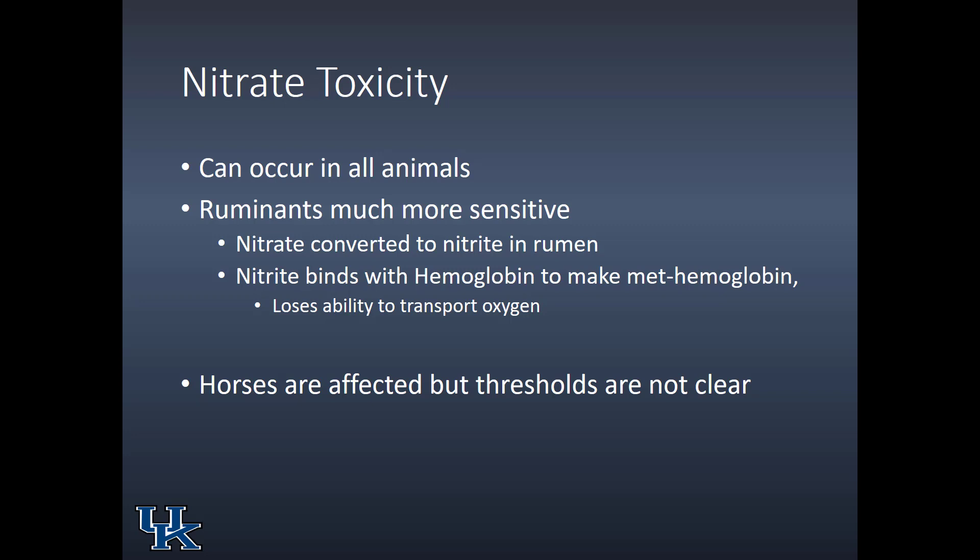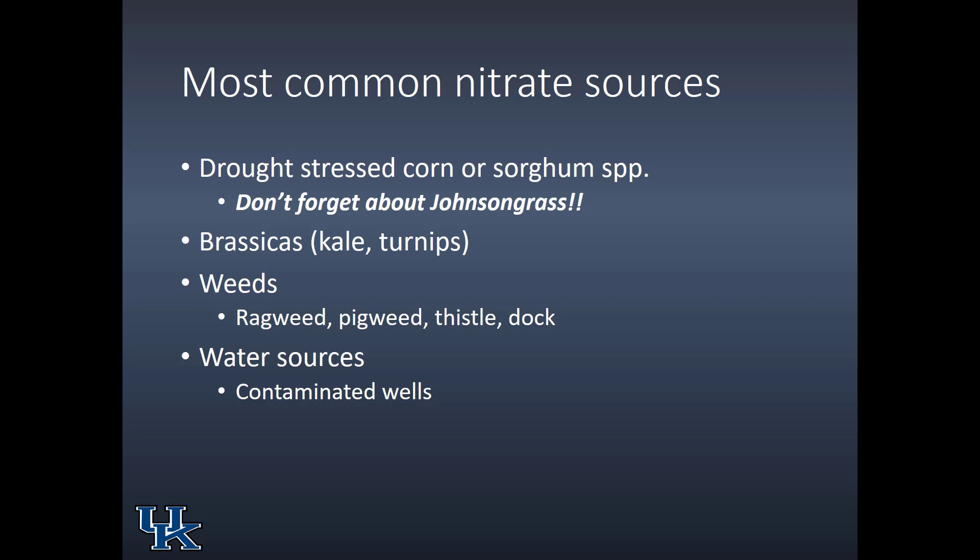Horses can be affected, as can most monogastrics, but the thresholds are not clear. Our most common nitrate sources are drought-stressed corn or sorghum species, but don't forget Johnson grass, which can be a source of both nitrates and prussic acid. Brassicas can also be a source, as can the weeds ragweed, pigweed, thistle, and dock — though notably these are weeds that livestock don't readily consume. Nitrates can also enter a ruminant's diet through contaminated well water.